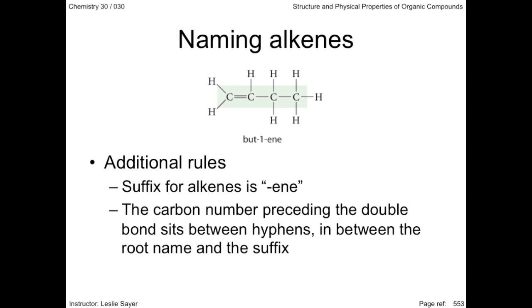For alkanes, the carbon numbering began at the end carbon that would give the branches the lowest possible numbers. For alkenes, carbon number 1 is at the end carbon nearest the double bond.